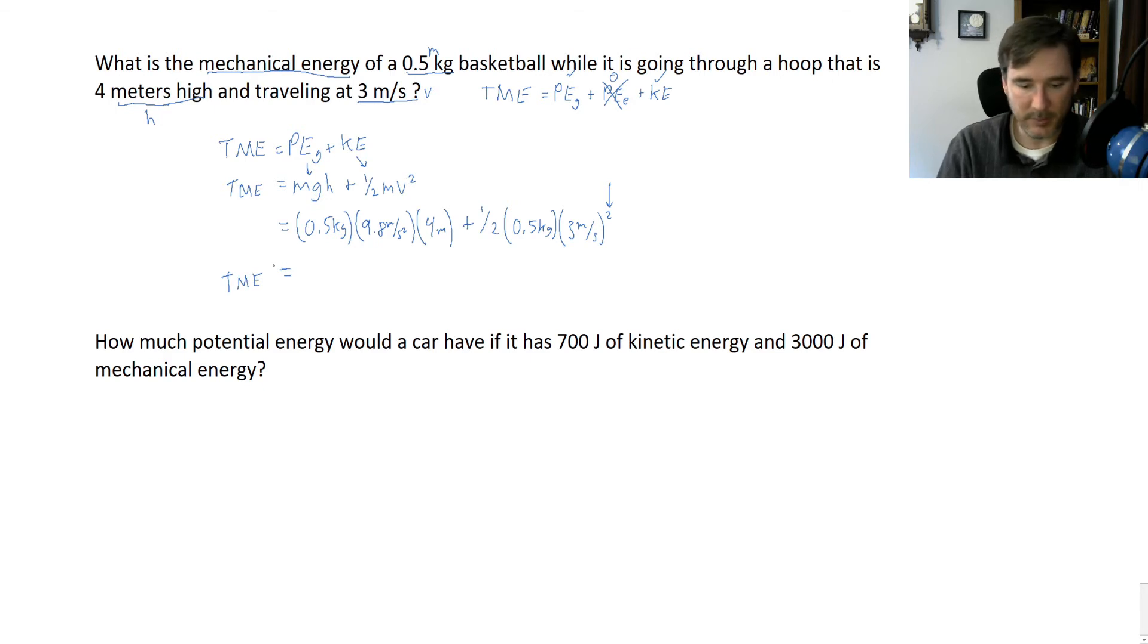I'm going to put all these numbers into my calculator. I'm going to make sure I do the order of operations correctly. I'm going to do 0.5 times 9.8 times 4, and if I really wanted to it's not a bad idea honestly just to put parentheses around these things. Plus, and then parentheses again, 0.5 or half times another 0.5 times the 3 squared.